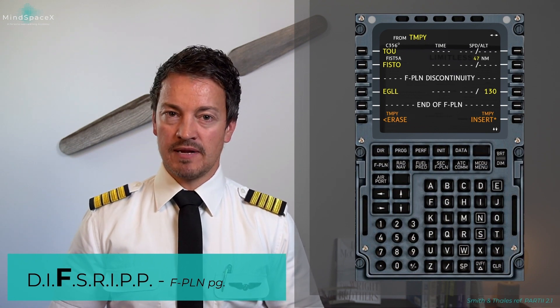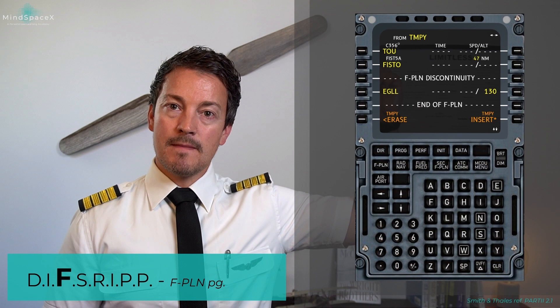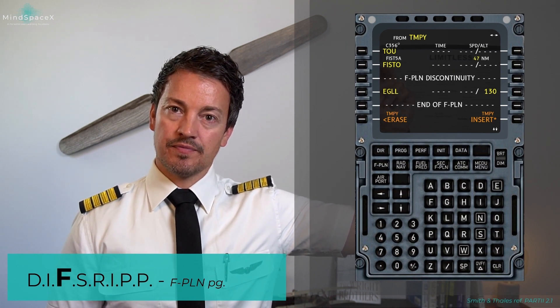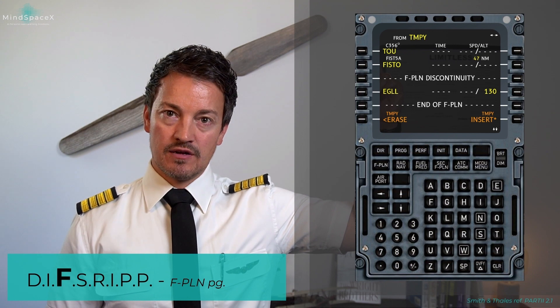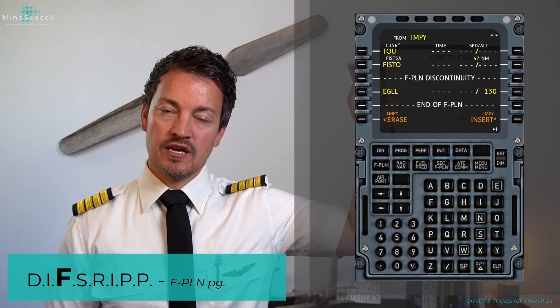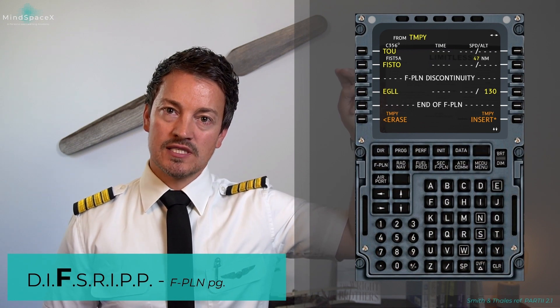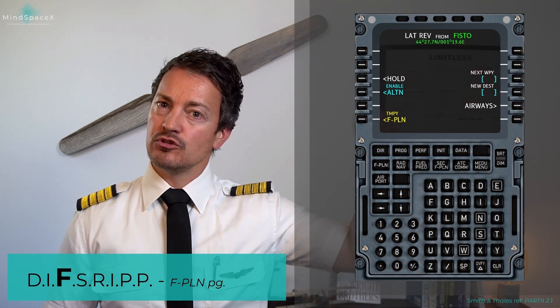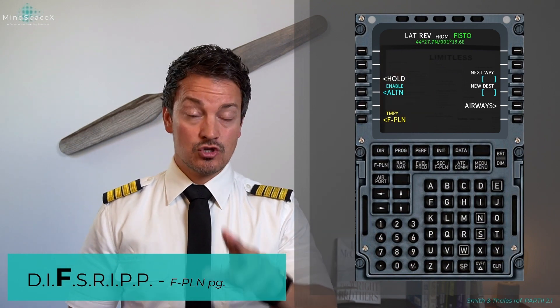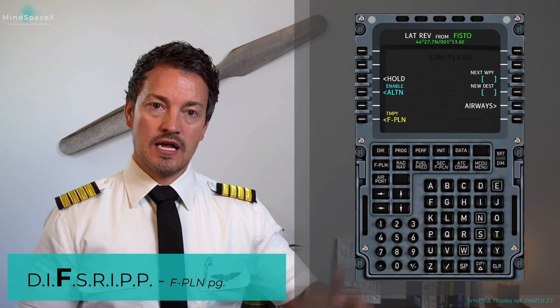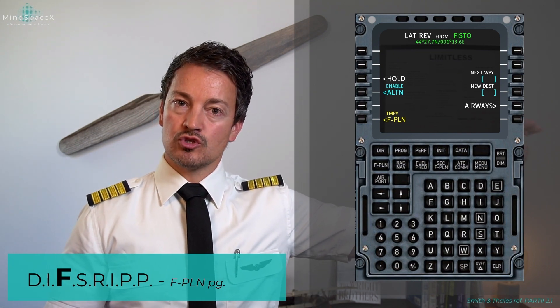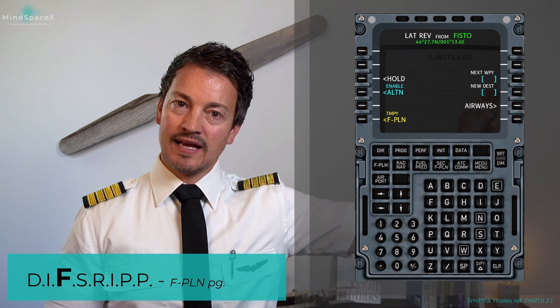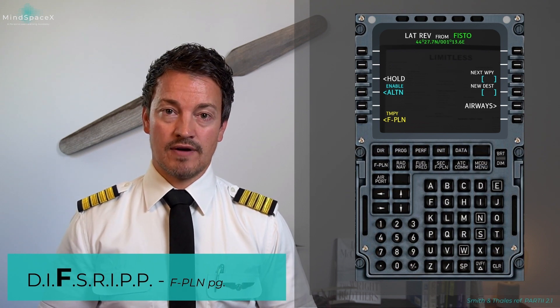I'm going to continue here on the temporary flight plan — this is just a departure setup anyway. From FISTO, which is our last waypoint, I want to do a lateral revision again. So I will select the line select key next to FISTO. Lateral revision from FISTO: I have the option to select the next waypoint. Notice that I do not have the departure option I had before — that is only available from the departing airport. I can choose to insert airways or to insert simply the next waypoint.